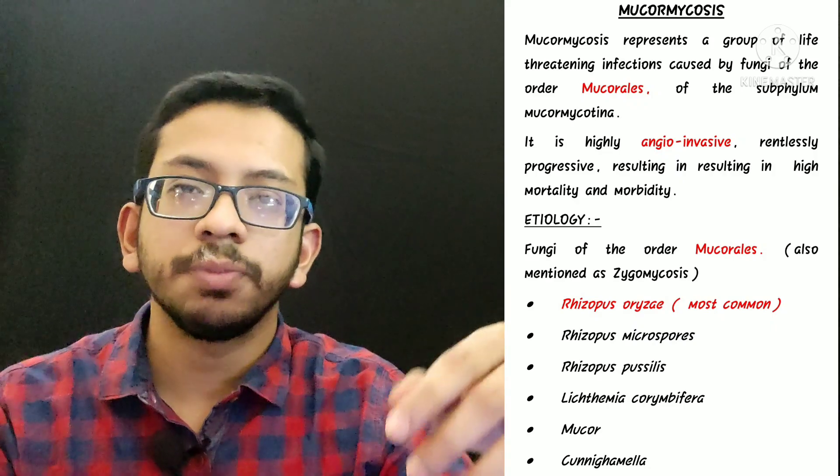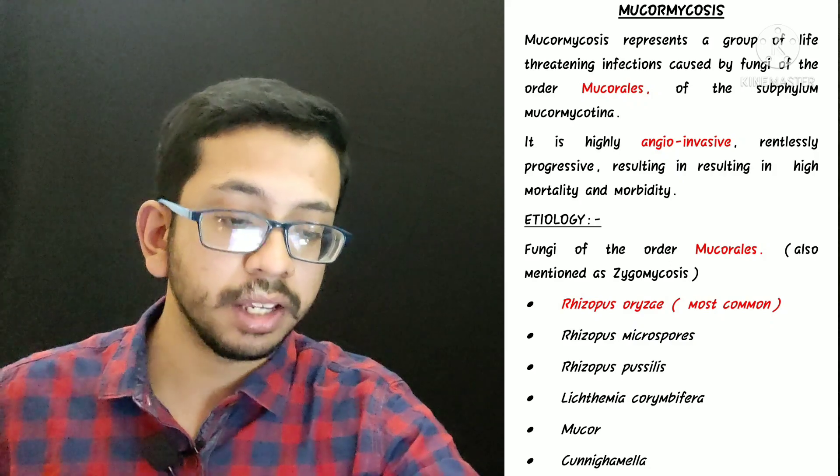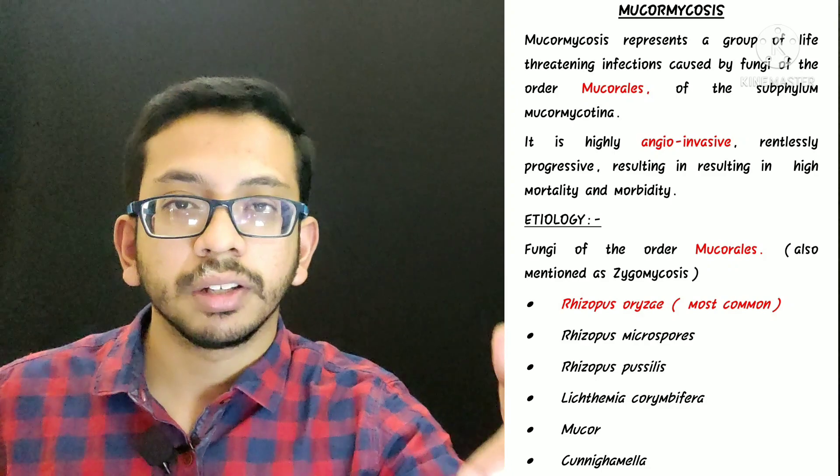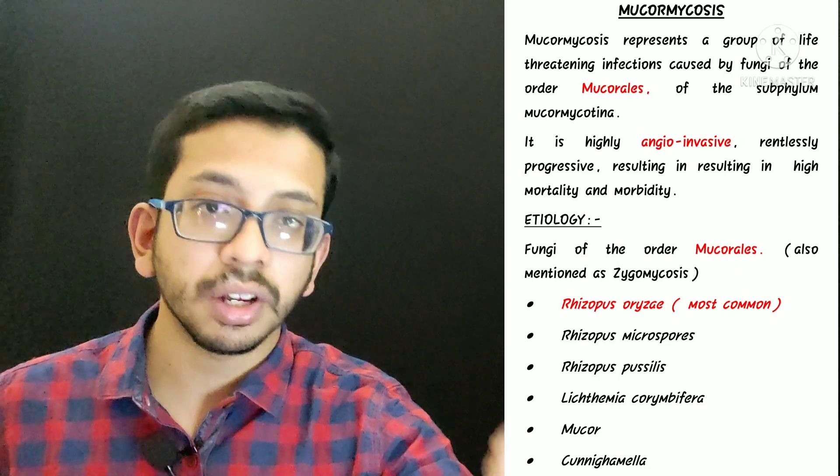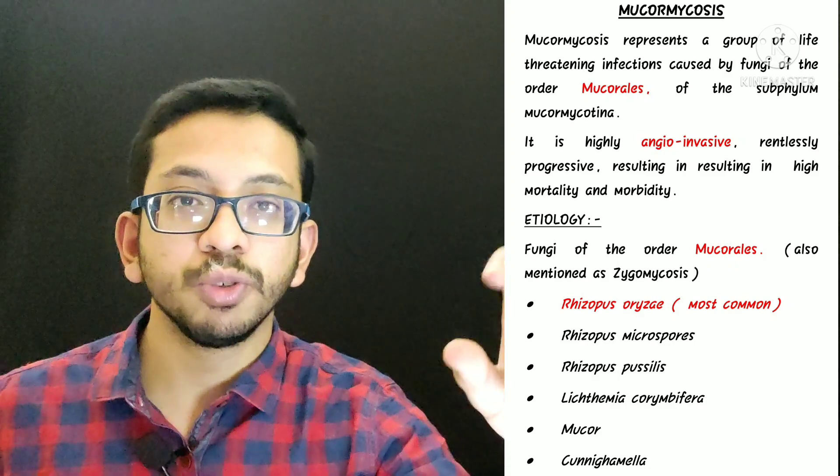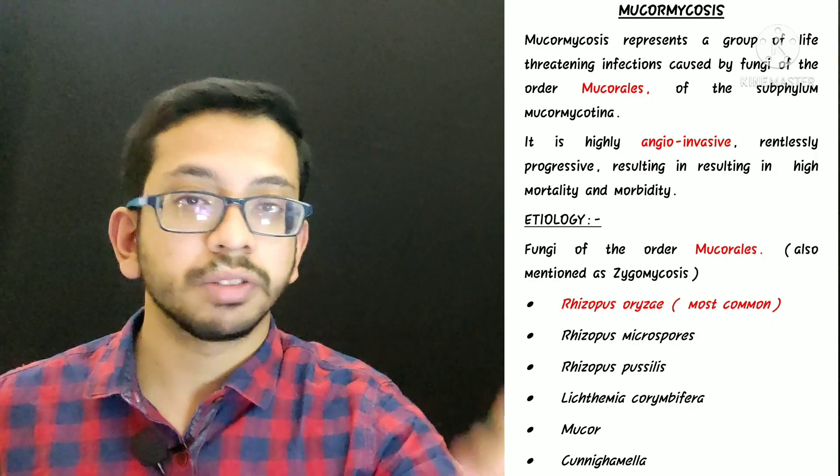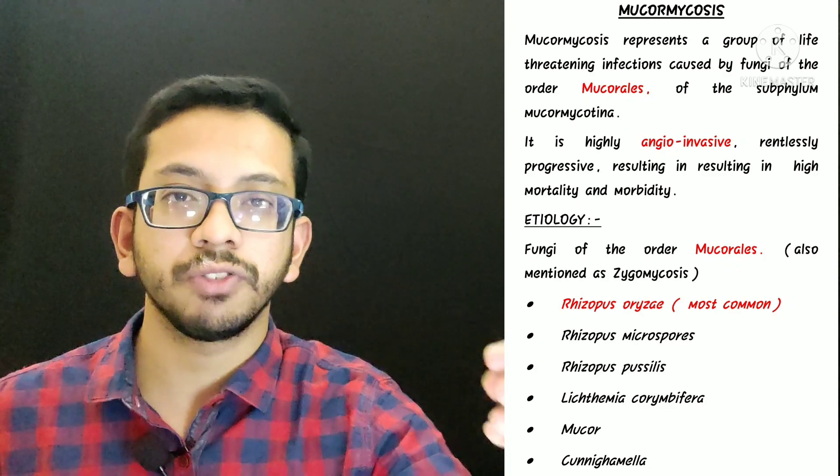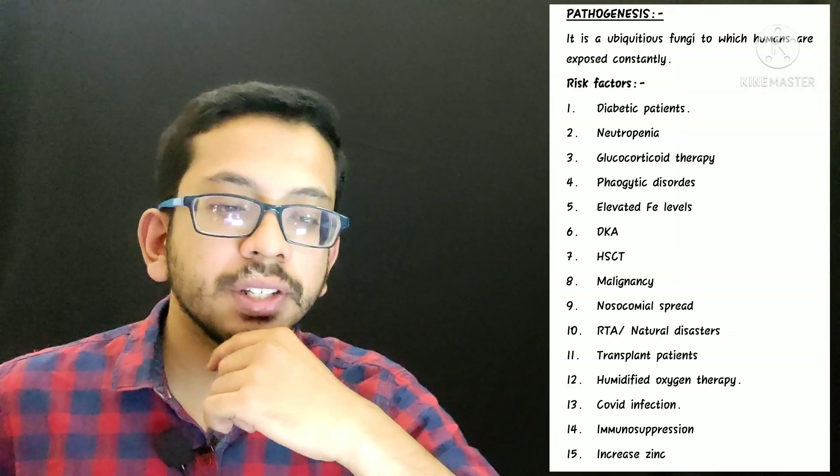Coming to the etiology, what causes mucormycosis? As I already told, mucormycosis is caused by fungi of the order Mucorales. What is the most common organism that causes mucormycosis? It is Rhizopus oryzae. This name is important. As you can see in the list, the fifth number organism is Mucor. Despite its name being Mucor, it rarely causes mucormycosis. So if you want to remember one name, then it is Rhizopus oryzae.